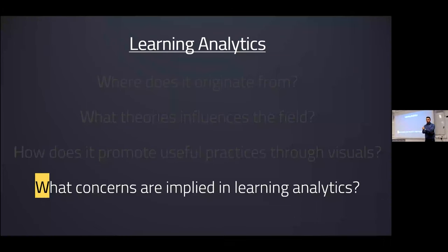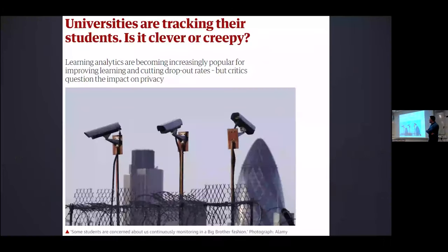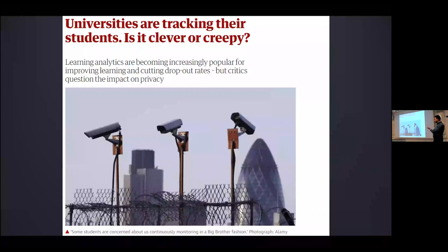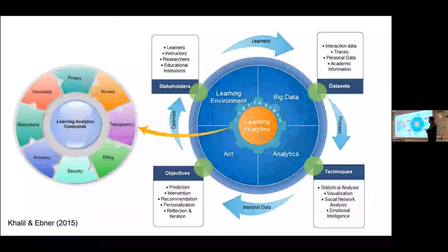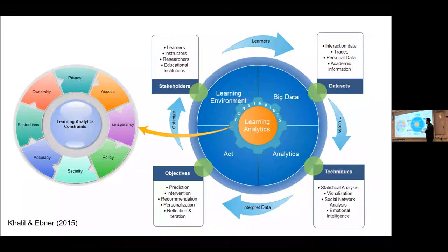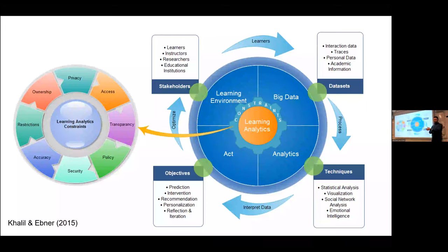The last question: what concerns are implied when involving learning analytics? Of course, it's privacy. Learning analytics are becoming increasingly popular for improving learning, but critics question the impact on privacy. I've been looking into this since 2015. I found a framework summarizing seven issues: privacy, accessibility, transparency, policy and security, accuracy of information, restrictions, and ownership of data. That was in 2015, and in 2018 we heard of the GDPR — General Data Protection Regulation — so things have been changing.